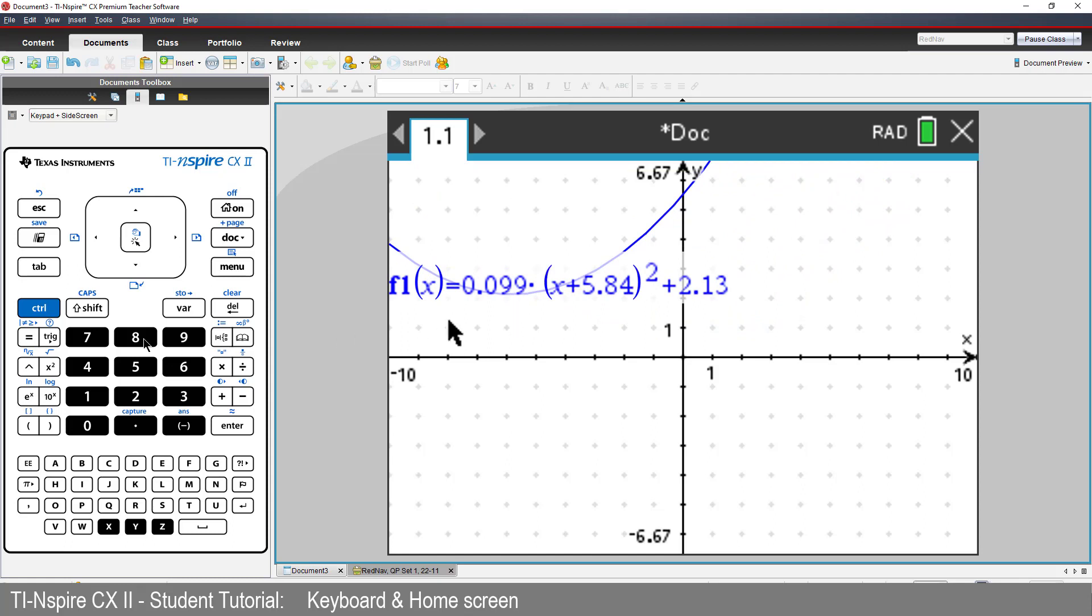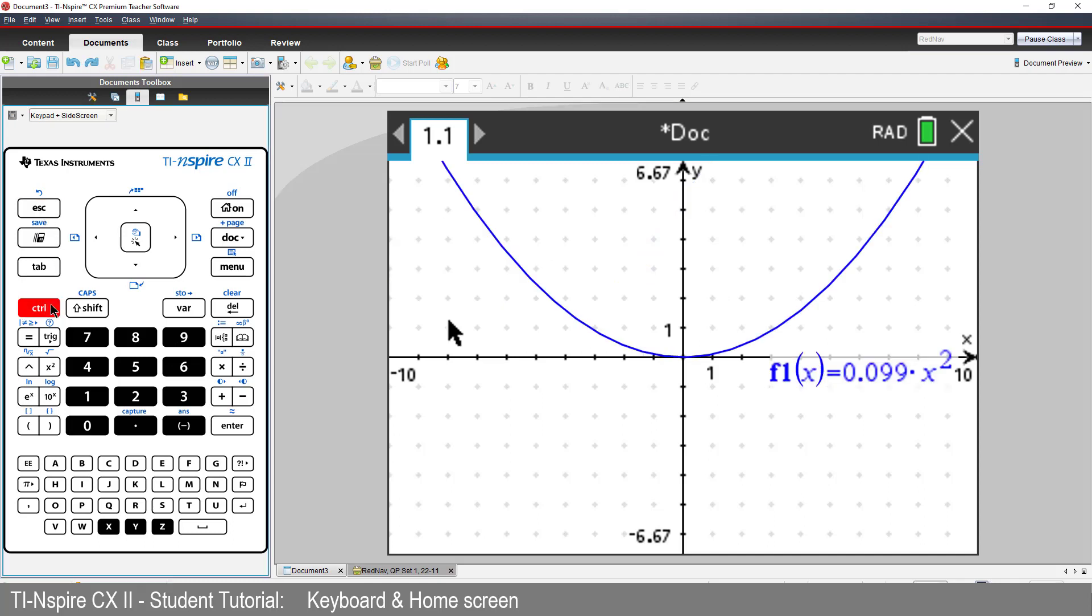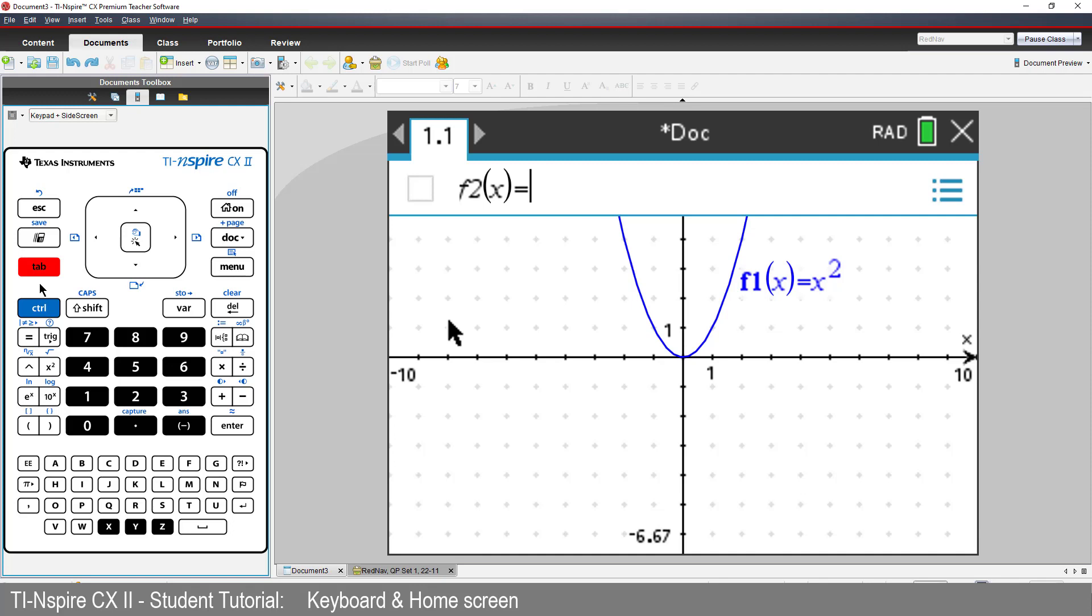If I want to put it back, I can undo all these movements by just pressing Ctrl followed by Escape or Ctrl Z. Press the Tab key again and the graph entry line reappears.